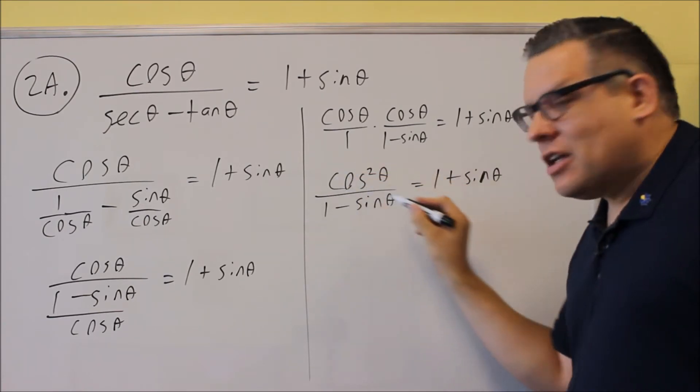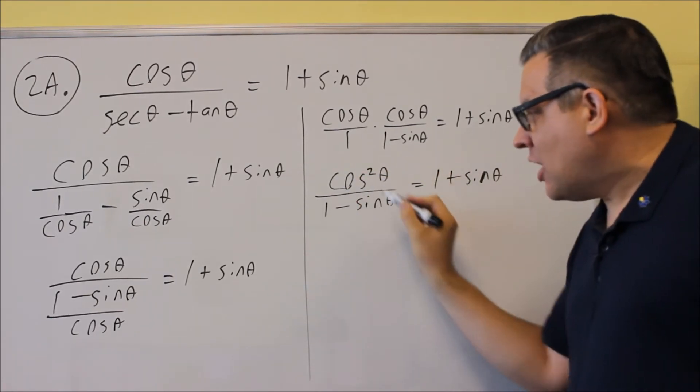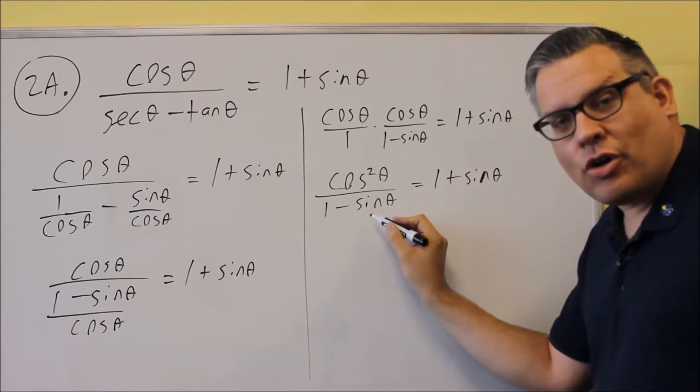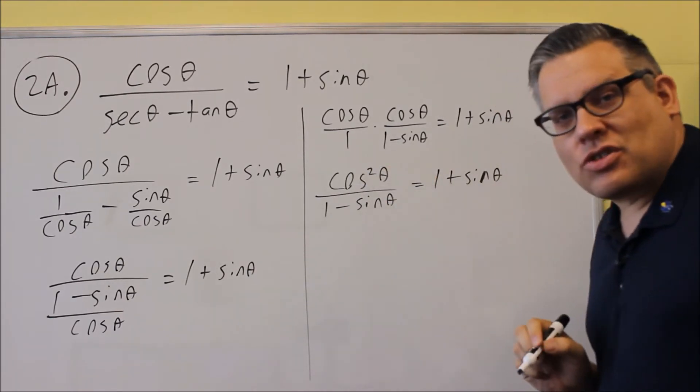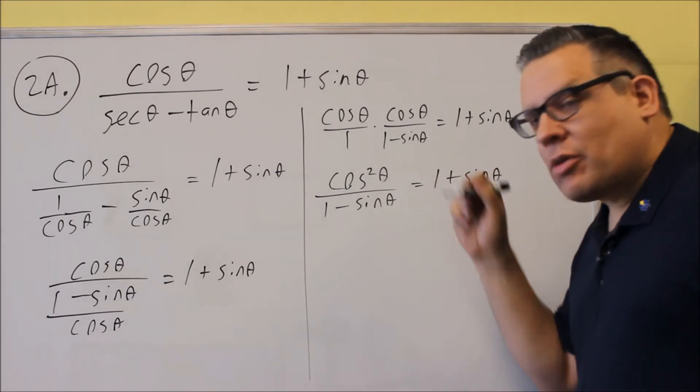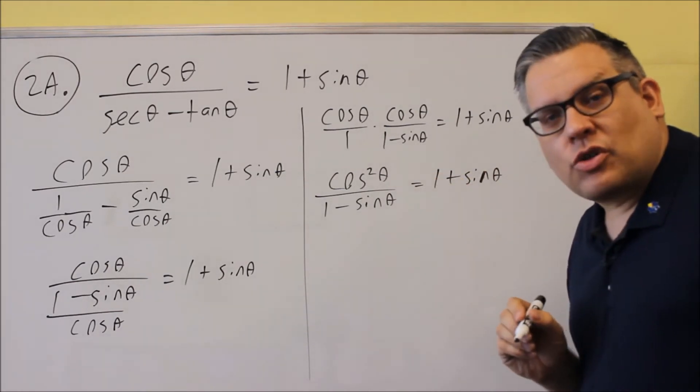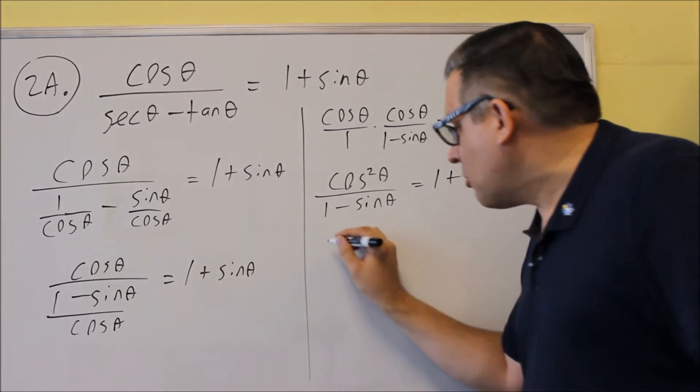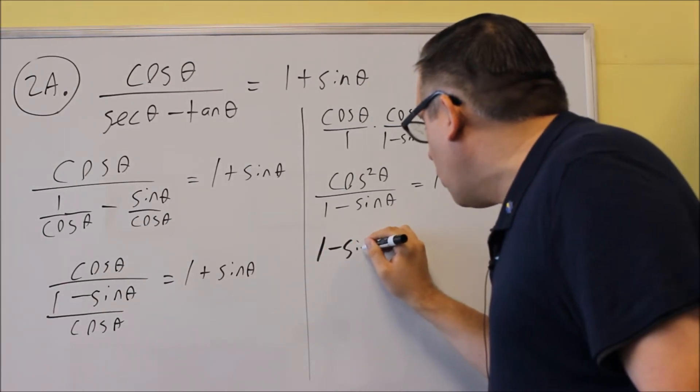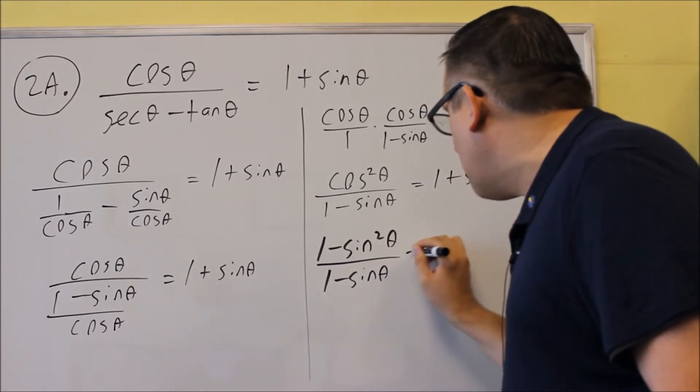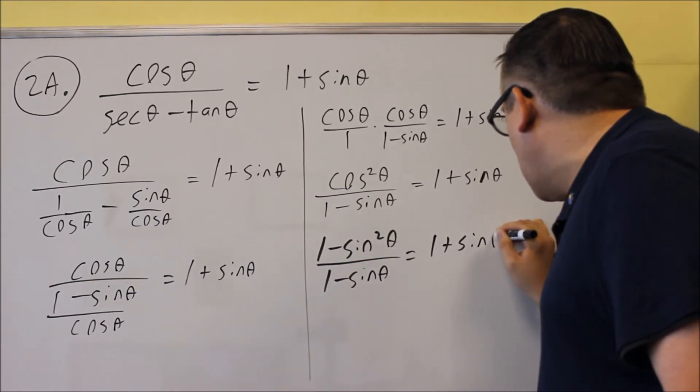I want to find an identity to change out cosine into a sine because since I've got to get sine on this side and I have a sine down below, then I want to change that into a sine. So if I look at my list of identities, the one that works will be cosine squared equals one minus sine squared. So I'm going to put the identity one minus sine squared here and I have one minus sine down below and on the other side I have one plus sine.